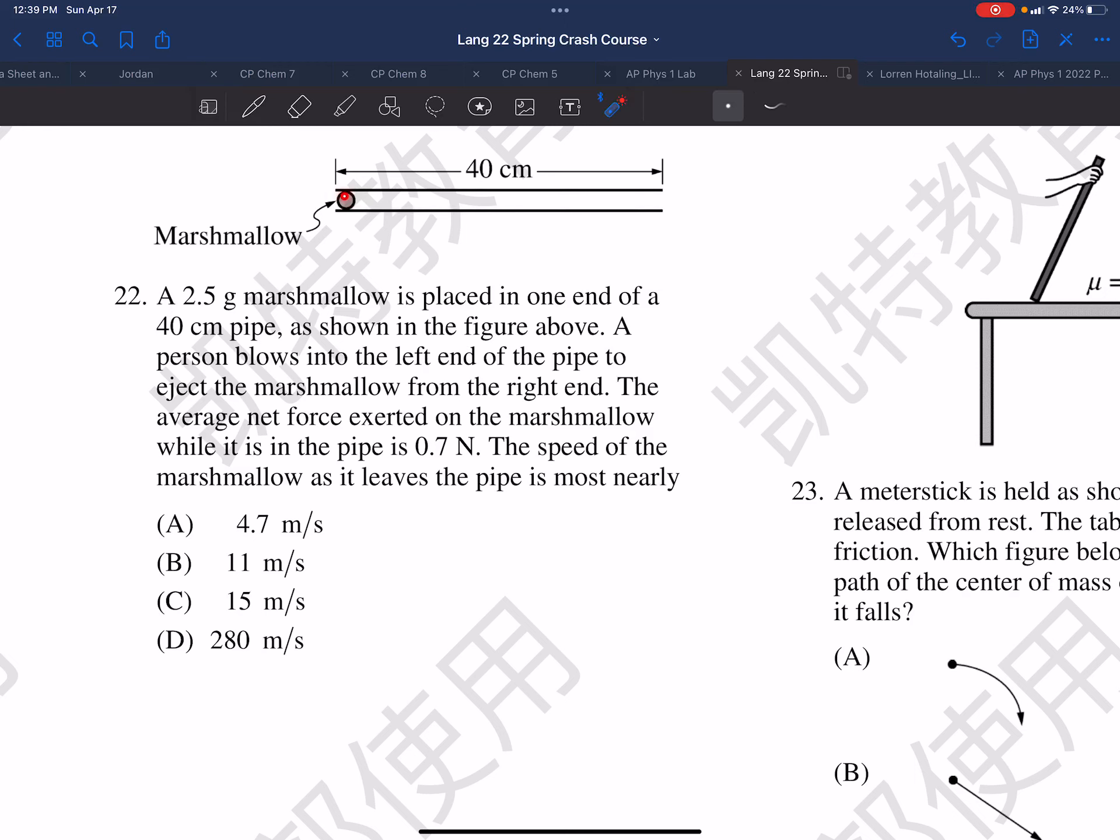In this scenario we have a marshmallow placed in the pipe. It becomes a blow gun or blow dart. Person blows in it and the marshmallow is going to accelerate and leave. The average net force is 0.7 Newton and we want to know the speed as it leaves the pipe.